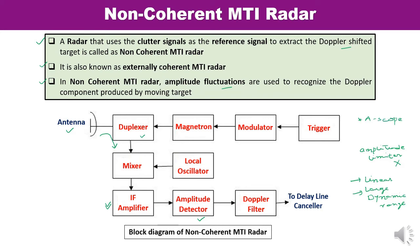A Doppler filter is used to remove unwanted components including noise. The output of the amplitude detector can be processed depending on the requirement — either using a delay line canceller or by observing it on an A-scope. If the output is observed on an A-scope, it will look like a butterfly effect, and this is due to the Doppler-induced amplitude fluctuations.